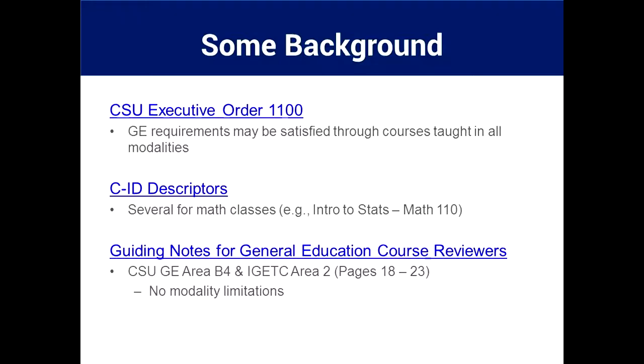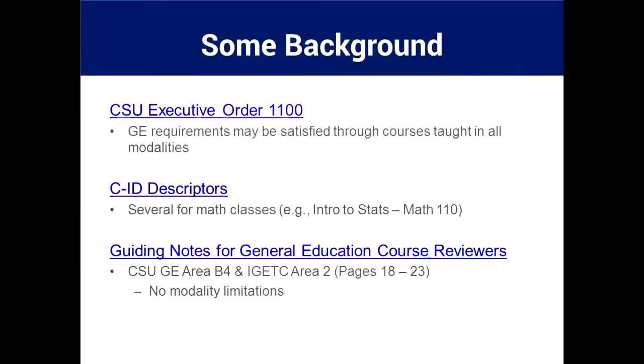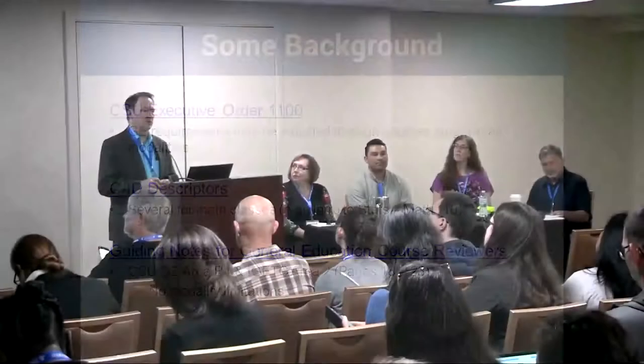Also helpful are the CID descriptors, part of the transfer model curriculum — the people who bring you the ADT structures. There are CID descriptors for several math courses, among them Math 110 Statistics. If you go there, you see what looks like a course outline and it describes activities expected in such a class, whether on-site or online. There are also guiding notes for GE reviewers covering courses that satisfy CSU and UC quantitative requirements, so I encourage you to look there.